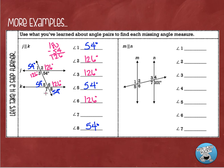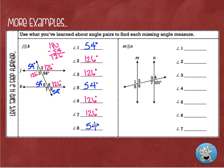Angle 7 is also going to be 126 degrees — first, it's vertical to angle 6; another reason is it's corresponding with angle 3; and the third reason is it's alternate exterior with angle 2. Stop the video now, try the next problem on your own, then press play and we'll check it together.